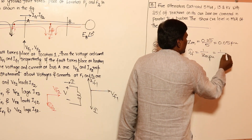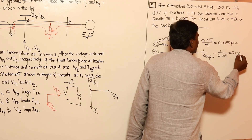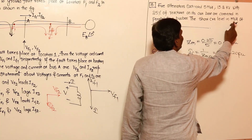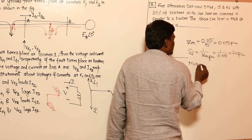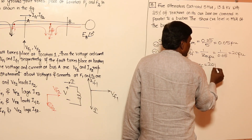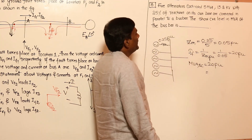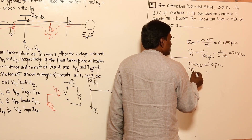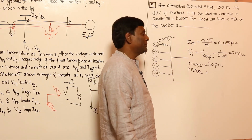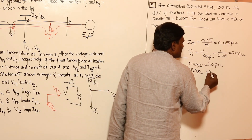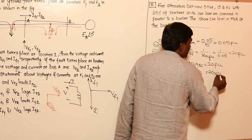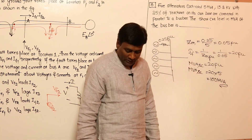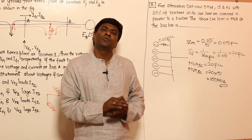Z-Thevenin equals 0.05 per unit. Fault current level equals 1 divided by Z-Thevenin, so fault current is 1 by 0.05 equals 20 per unit. The short circuit MVA is also 20 per unit. In actual MVA, multiply per unit by base: 20 into 5 MVA base equals 100 MVA. That's a simple problem — don't get scared in fault analysis; small questions only come.